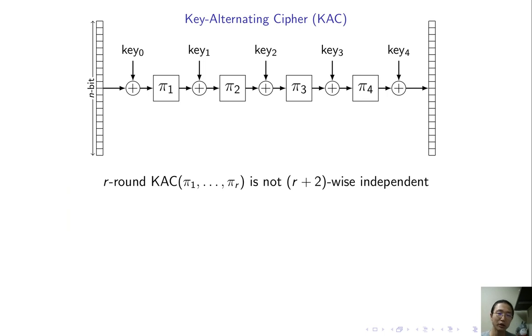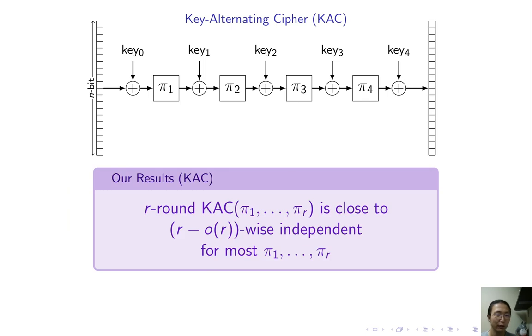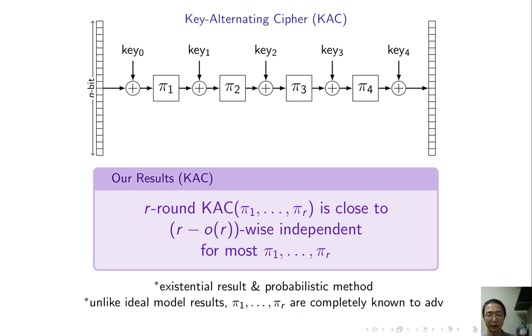Our positive result almost matches this bound. We show that R round KAC is close to slightly smaller than R wise independent. This is an existential result and is proved by probabilistic method. I would like to emphasize here the difference between our result and the ideal model results. In ideal model results, pi is typically modeled as random permutations, to which adversaries only have oracle access. Well, in our result, pi is public. And it's completely known to adversaries.